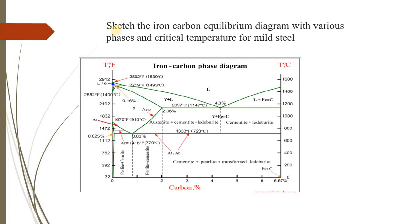The first question is a common question asked in this past paper: sketch the iron-carbon equilibrium diagram with the various phases and critical temperatures of mild steel. This question is common in all past papers. We have this question for 10 marks.